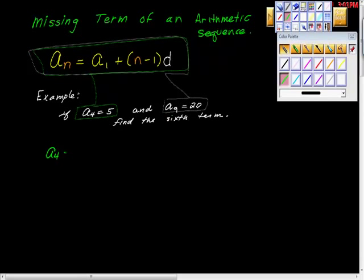We know that the fourth term is equal to the first term plus, so we want the fourth term, the fourth term is first term plus the fourth term minus 1, so minus 1 times the common difference. That actually does help because we also know that the fourth term is 5.